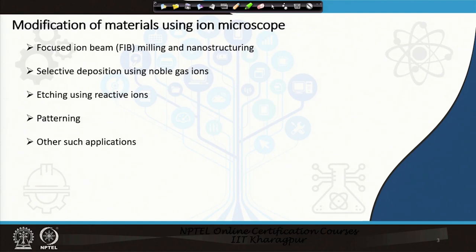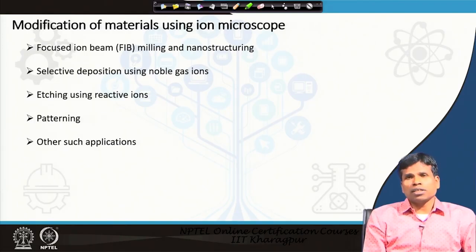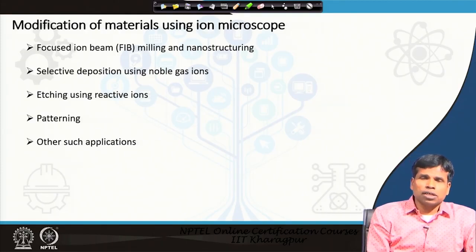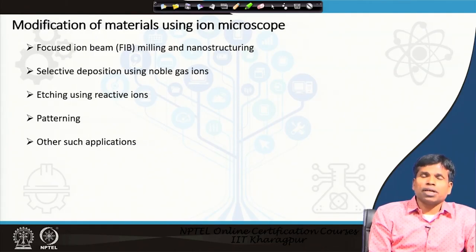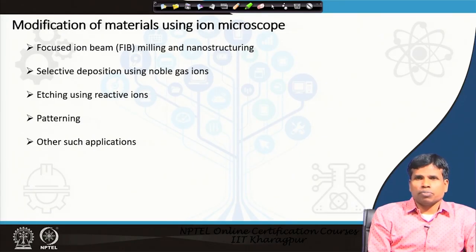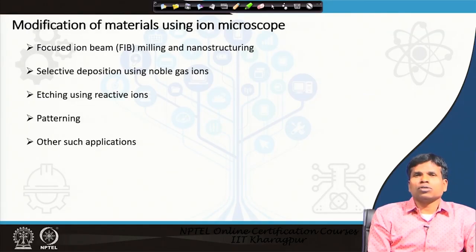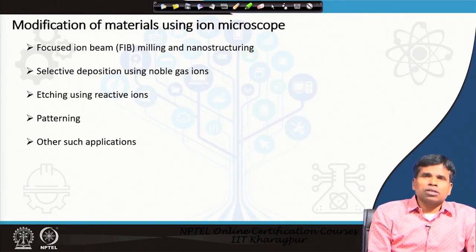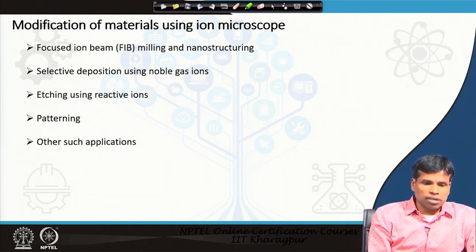Modification of materials using a helium ion microscope is not new, because until the helium ion microscope came to prominence, we had scanning electron microscopes — and for many decades the SEM has also been attached with ions for lithography or ion milling purposes. Particularly, gallium ions have been used for several years now to create features at the micron or sub-micron level. In that respect, the helium ion microscope is also capable of doing it with a much finer size, as we will see in today's lecture.